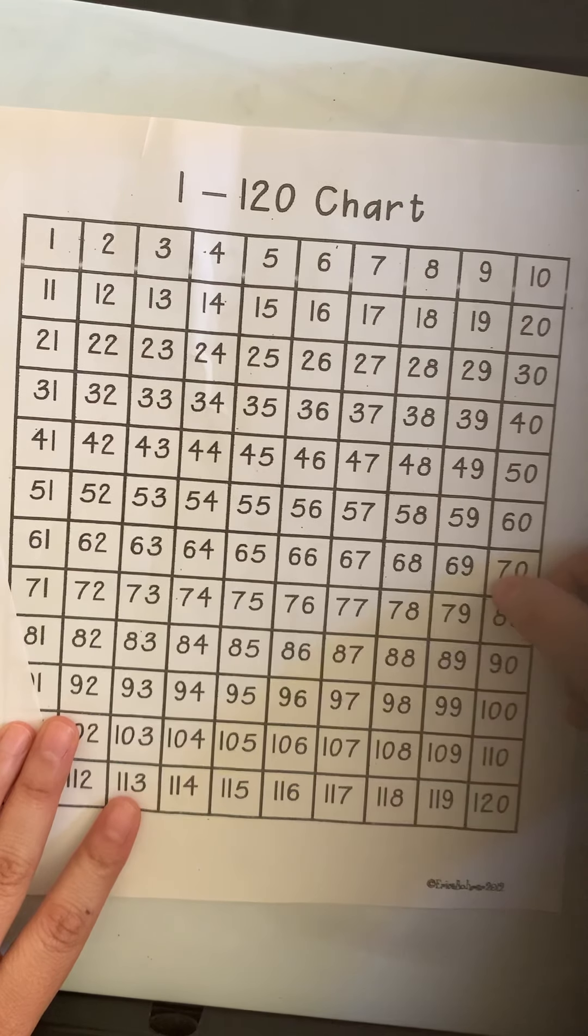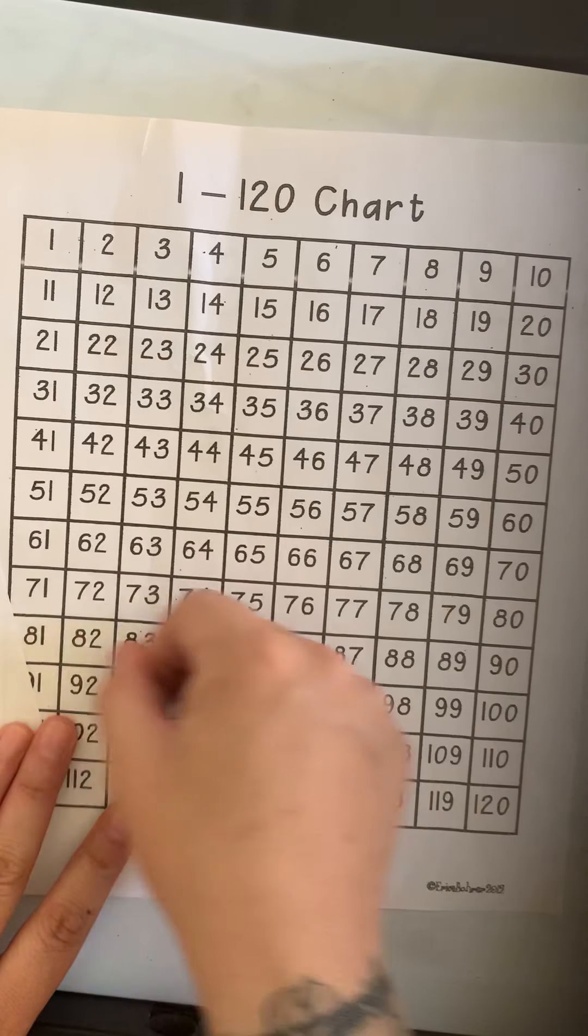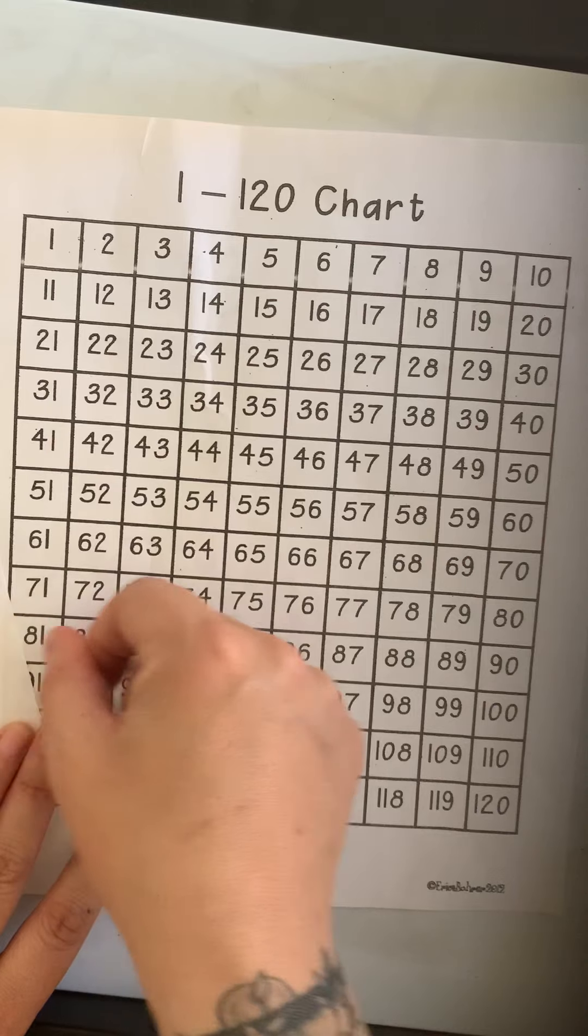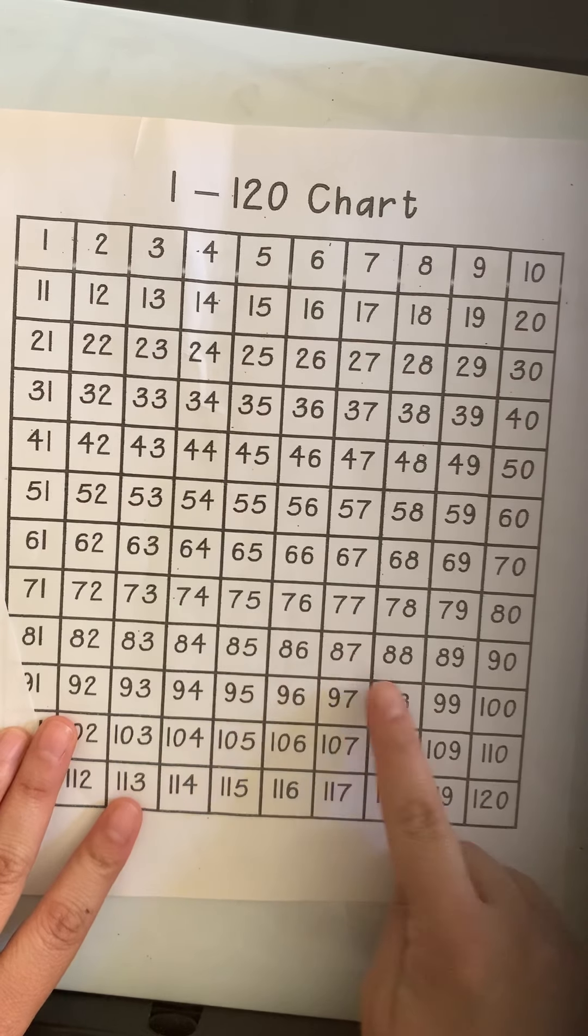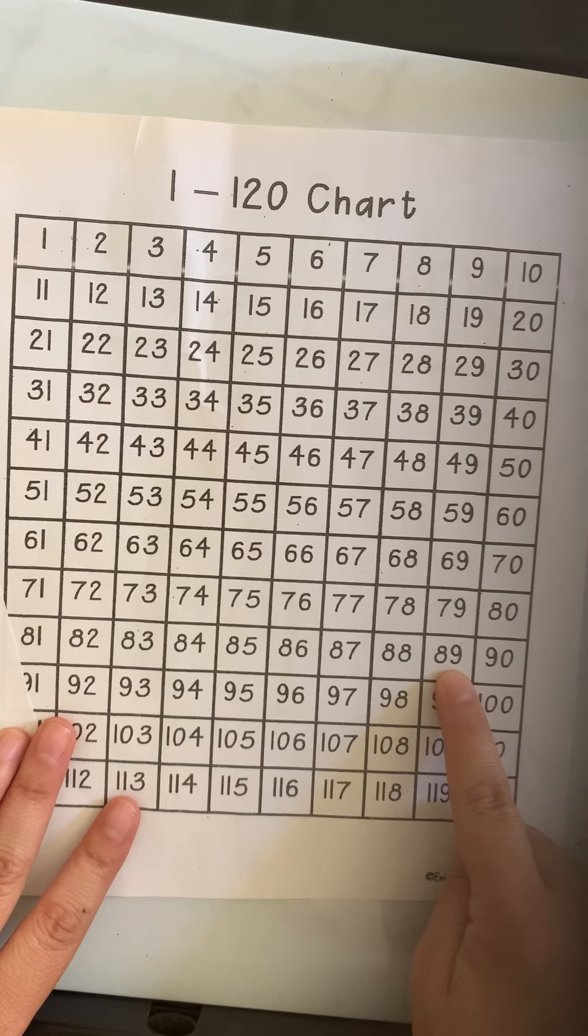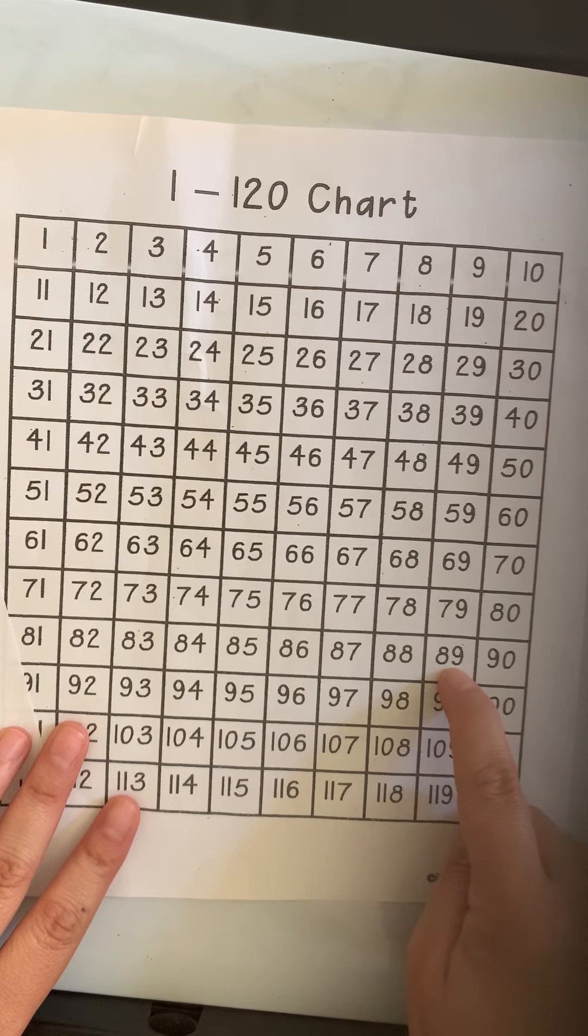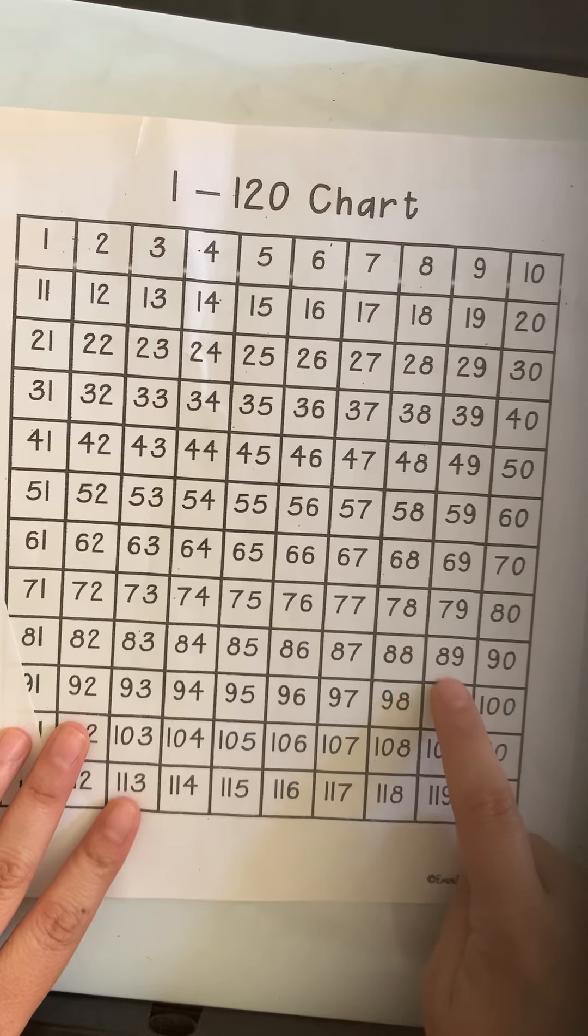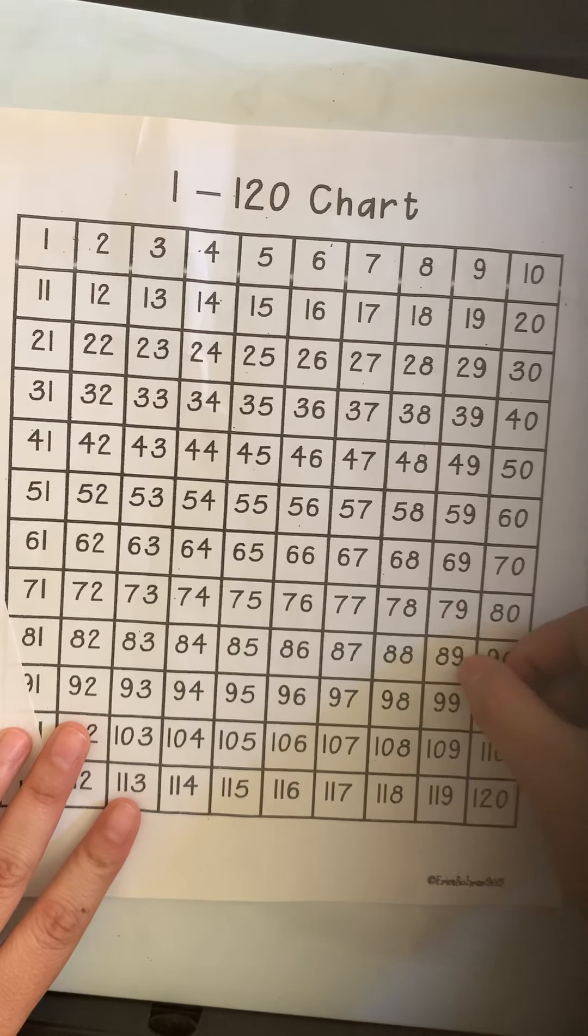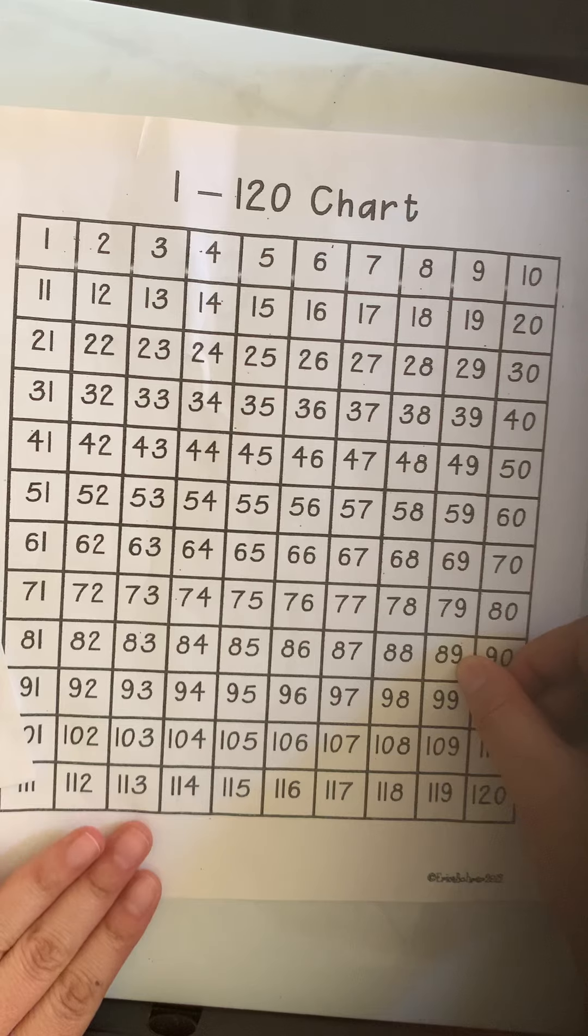If I want 10 more, I can count 10 more forward. 1, 2, 3, 4, 5, 6, 7, 8, 9, 10, which would give me 89. Or I can just jump forward on my chart up a whole row of 10 to get to 89.